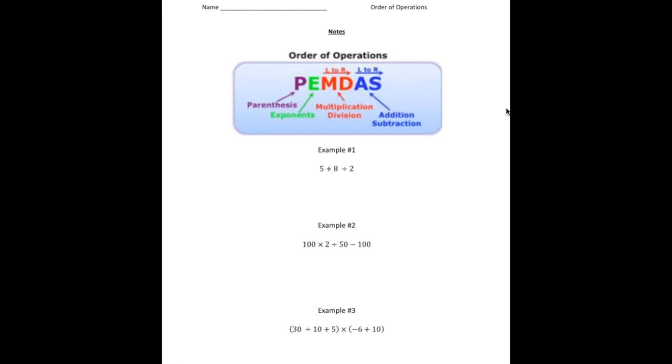Well, the Order of Operations is a precise order of how you need to simplify expressions. If you don't follow the order, you're at risk of getting a different answer. So maybe you've heard the term PEMDAS before. PEMDAS stands for parentheses, exponents, multiplication, division, addition, and subtraction.